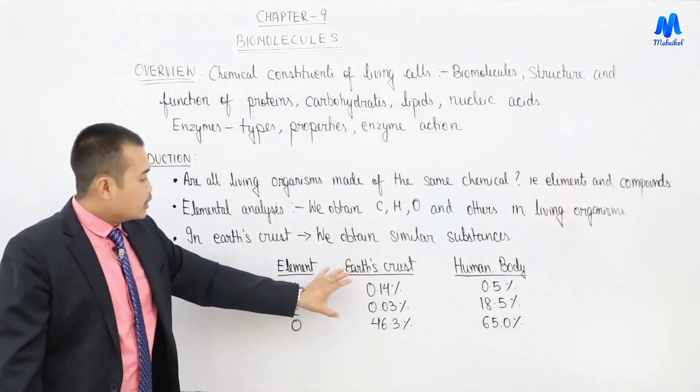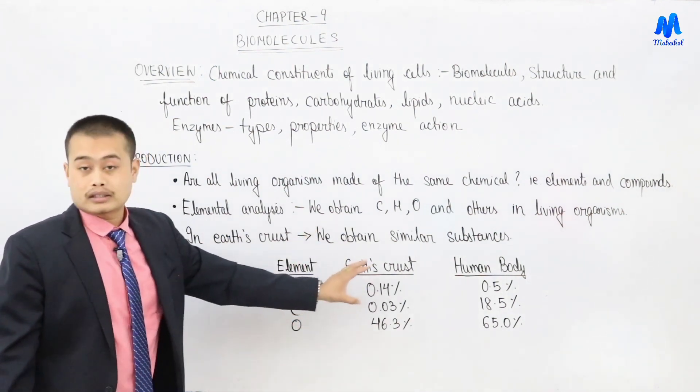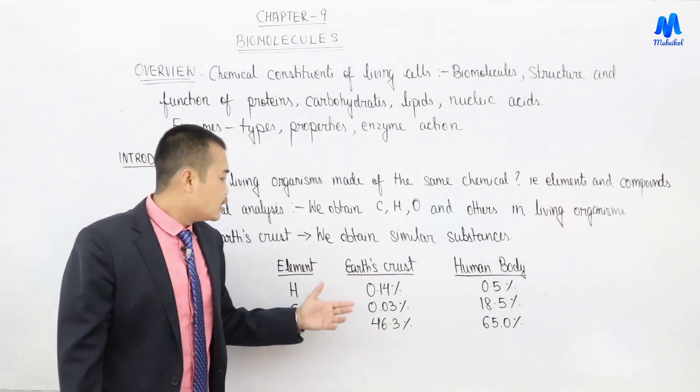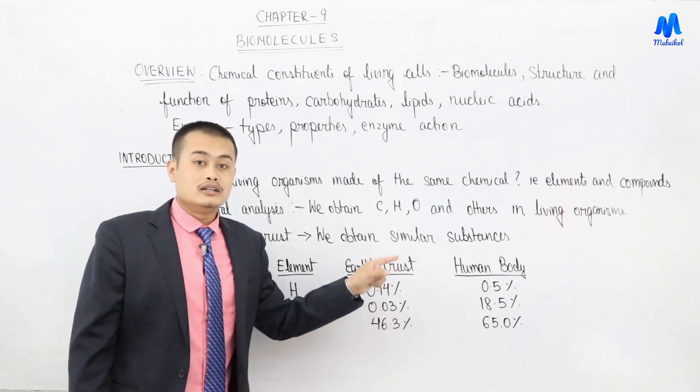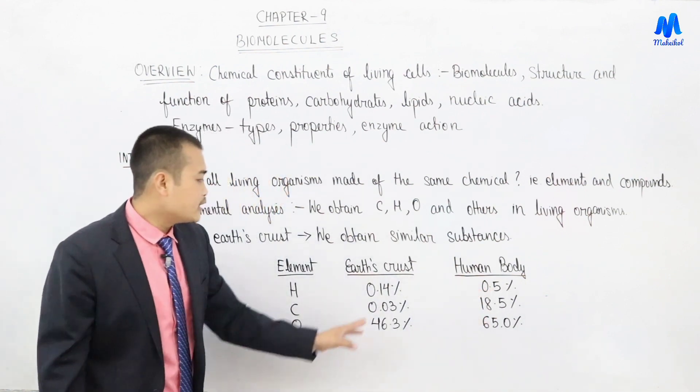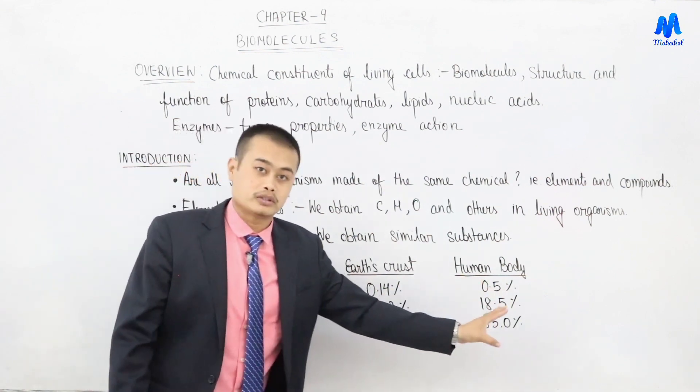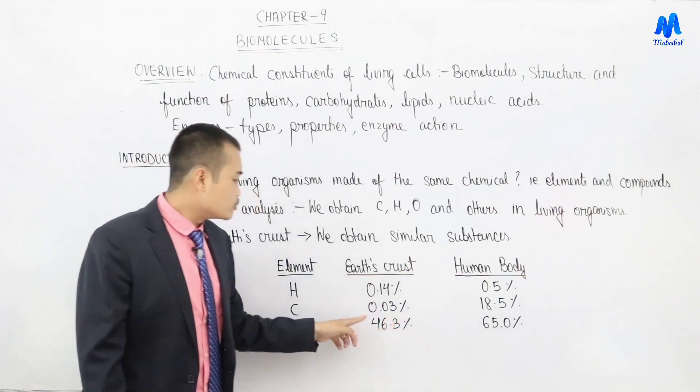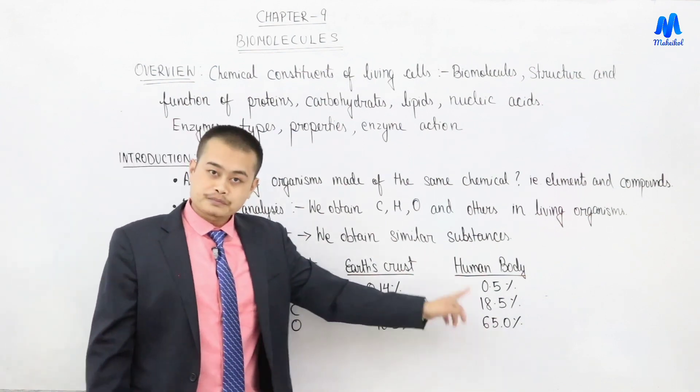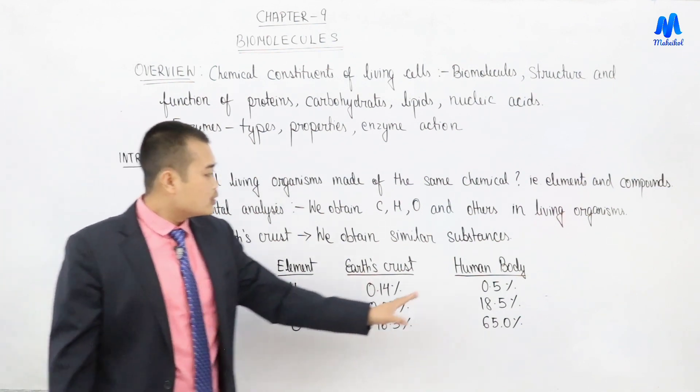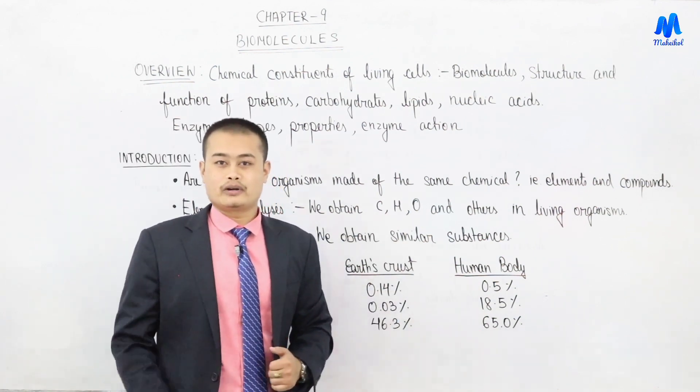This indicates the percentage by weight of elements in the Earth's crust versus the human body. Hydrogen: Earth's crust 0.14%, human body 0.5%. Carbon: Earth's crust 0.03%, human body 18.5%. Oxygen: Earth's crust 46.3%, human body 65%.